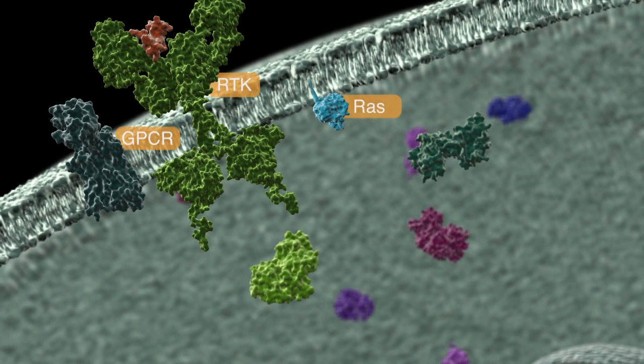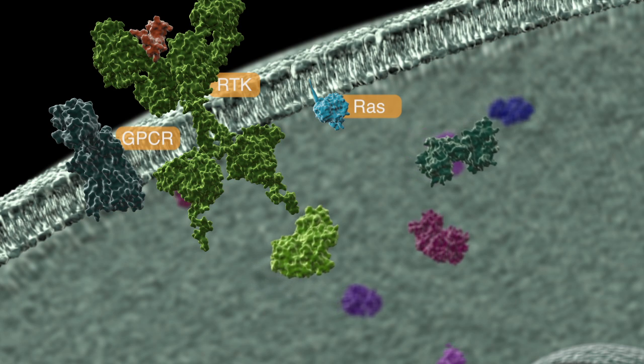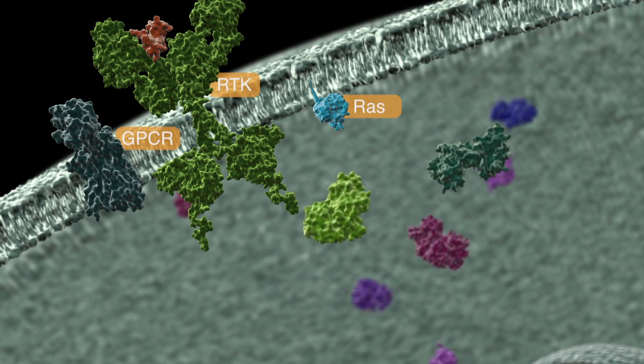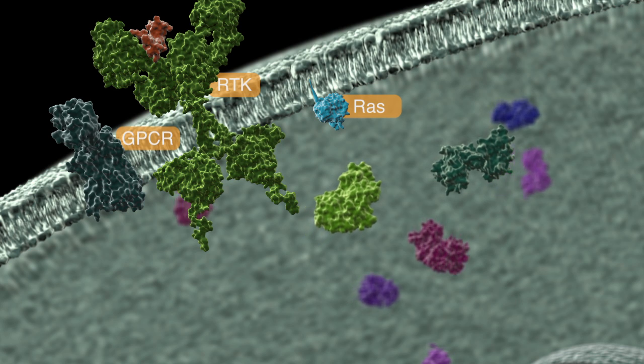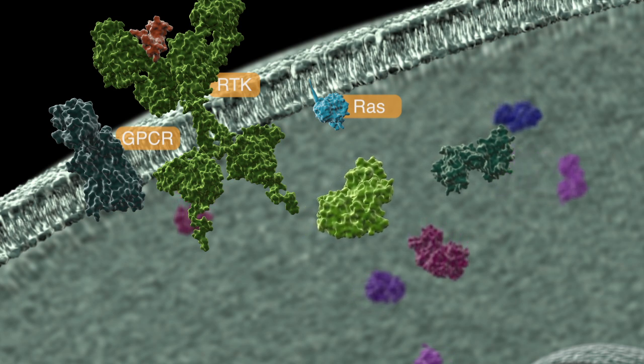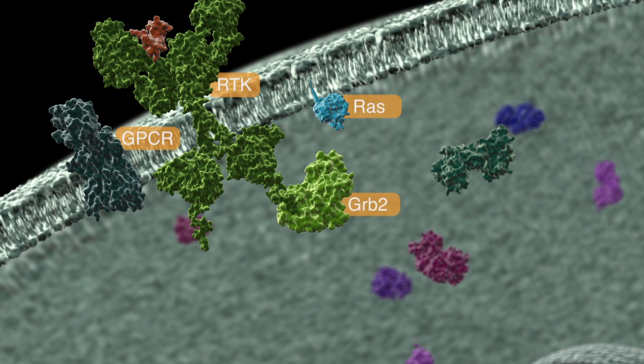Phosphotyrosine residues on the cytoplasmic tail of activated receptor tyrosine kinases serve as docking sites for adapter proteins, such as Growth Factor Receptor Binding Protein 2, or GRB2, which binds via its SRC Homology 2 domain, SH2.